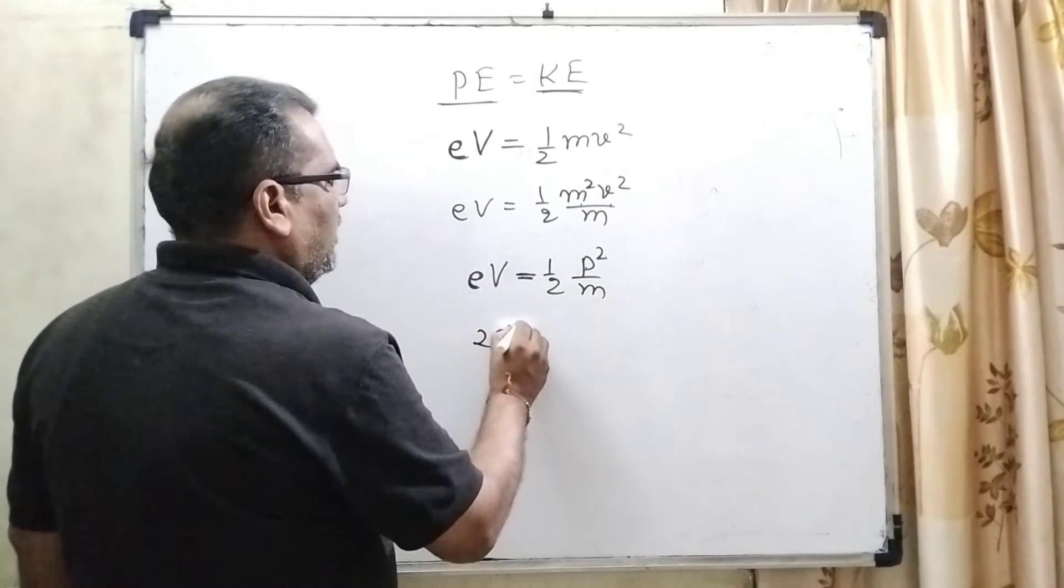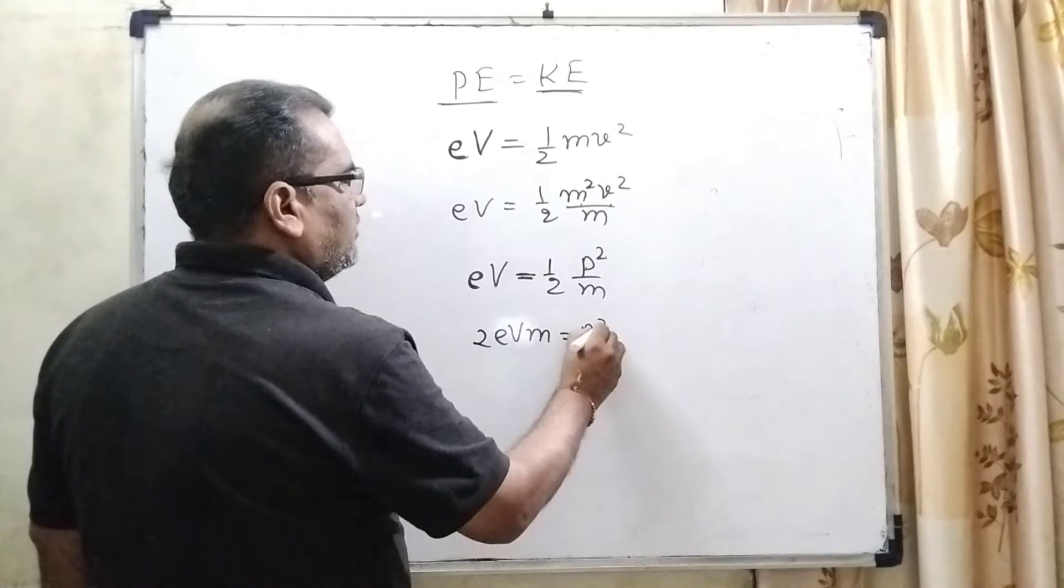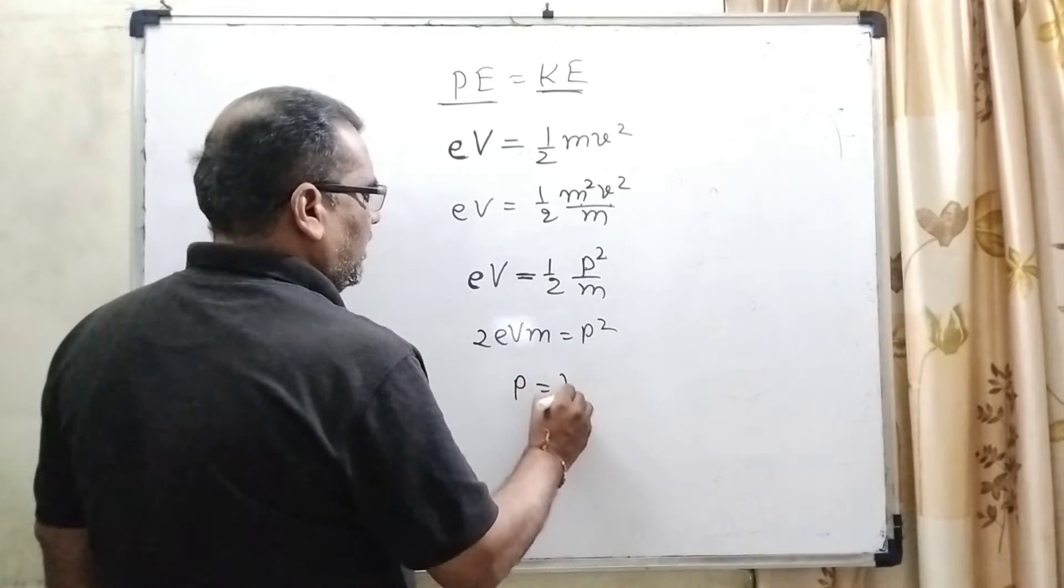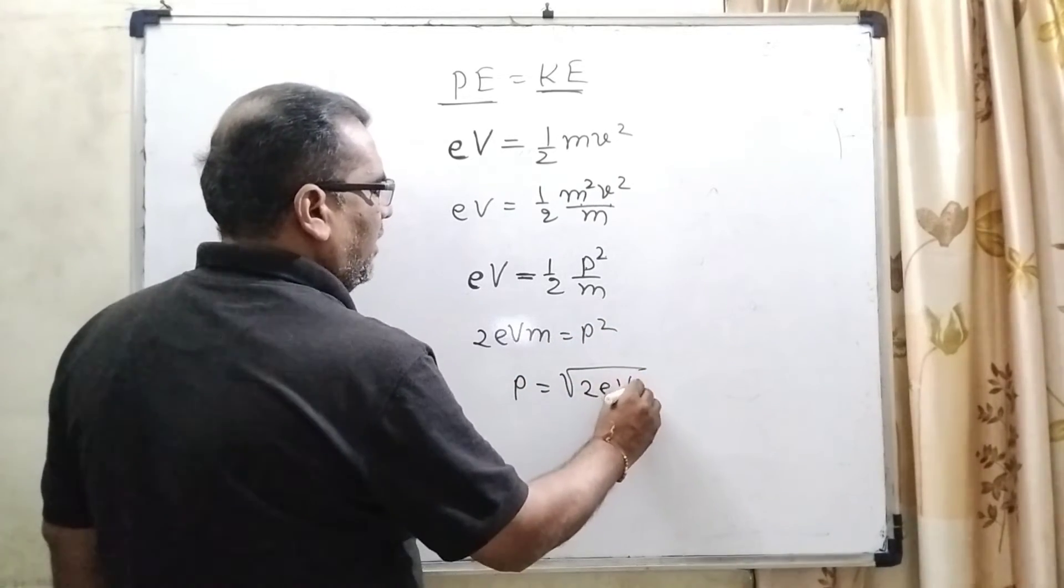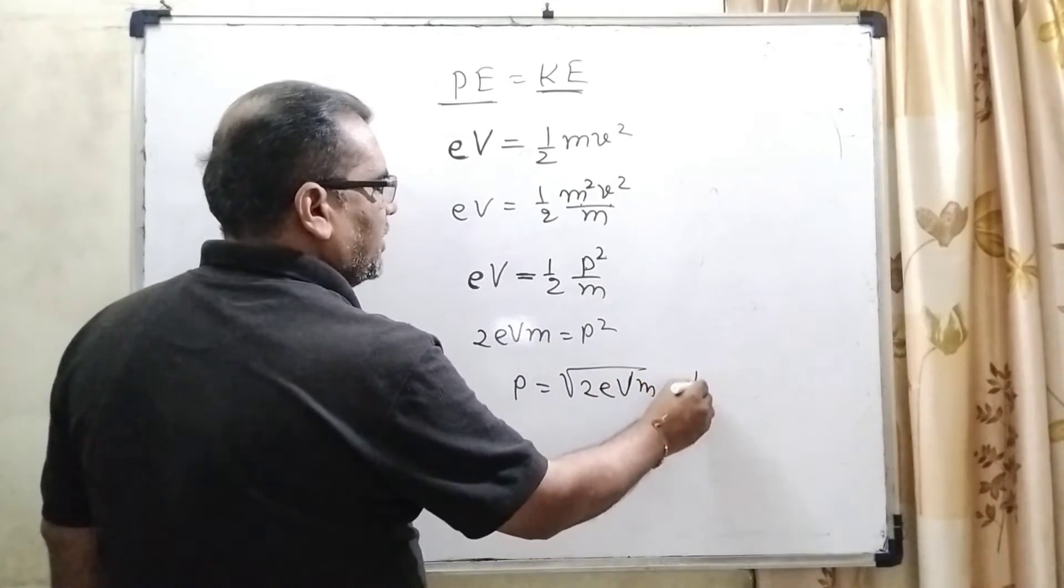So 2eVm = p², or it can be written as p = √(2eVm). This is equation number 1.